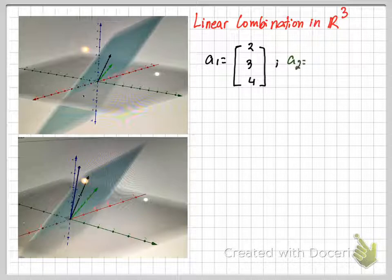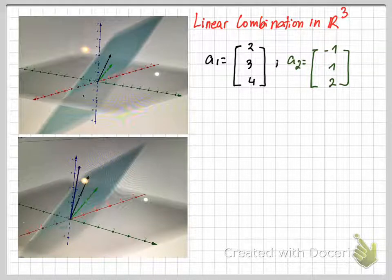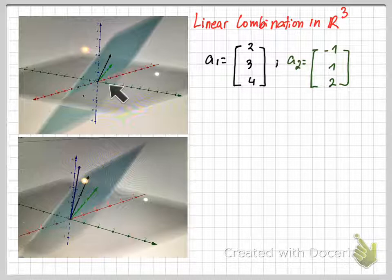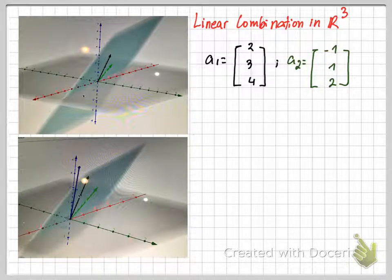Let's start with two vectors in R³: [2,3,4] and [-1,1,2]. You can look at this graph here. The green vector is the second vector and the black vector is the first vector in R³.